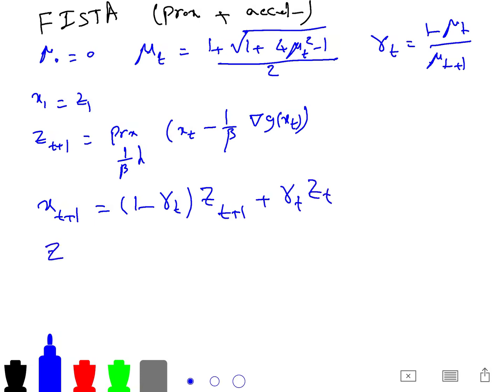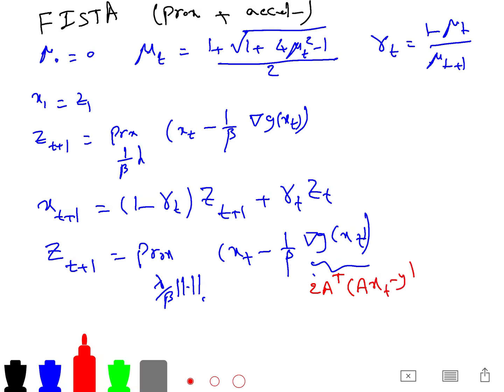For lasso, you know z_t+1 is now proximal of lambda over beta norm one of (x_t - 1/beta gradient of g(x_t)). So this one is 2A^T(Ax_t - y). So the convergence rate is of order of 1 over t squared, or we can write 1 over square root of epsilon error.